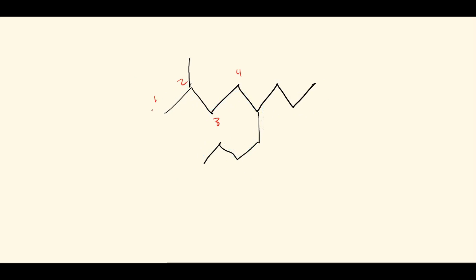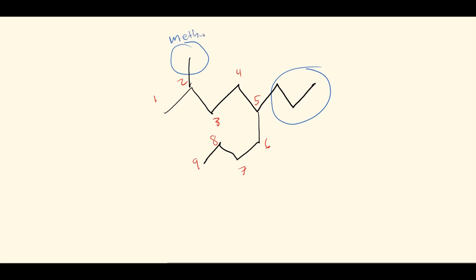Continuing the numbering: one, two, three, four, five, six, seven, eight, nine. Next we identify all the substituents — everything branched off the main parent chain. We have two groups: one is a one-carbon substituent. Normally CH4 is methane, but as a branch it's CH3, so we use the -yl ending, making it methyl. The next substituent is three carbons long, so that is a propyl.